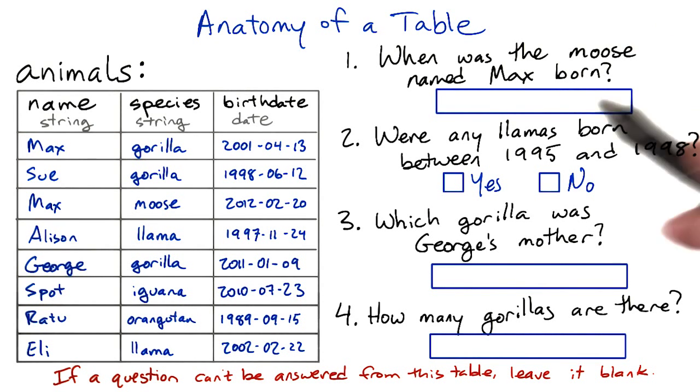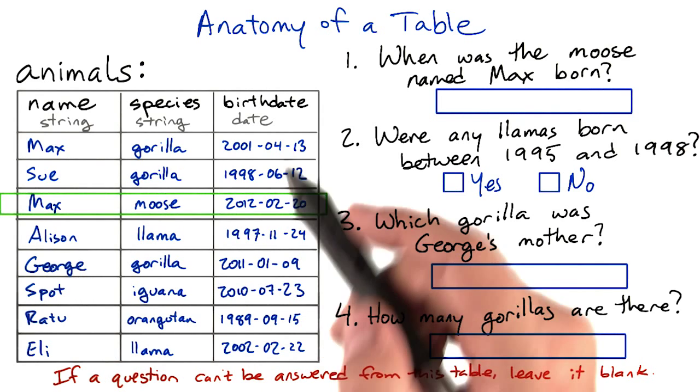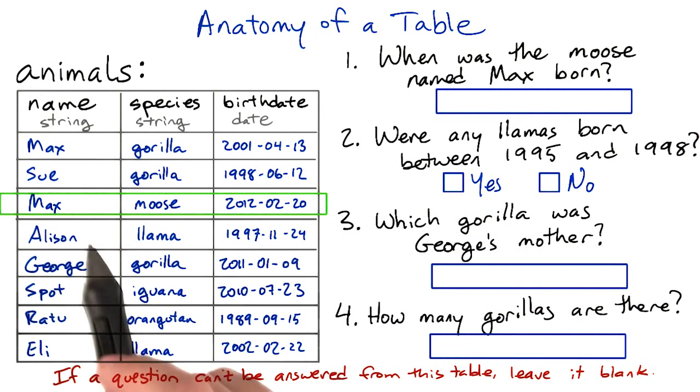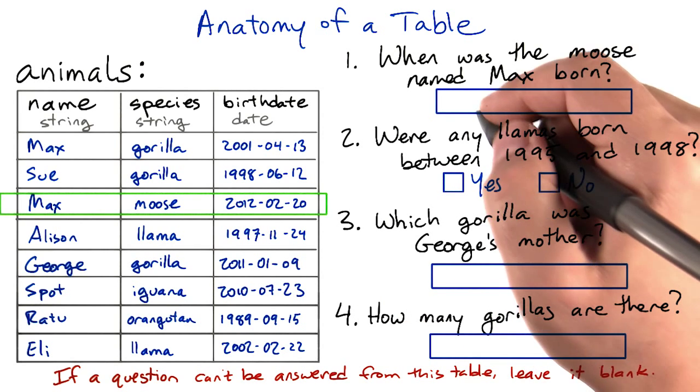So to answer the first question, we need to look for the birthdate column in the row that talks about Max the moose. Not Max the gorilla, though. And there it is. Max the moose was born on February 20, 2012.